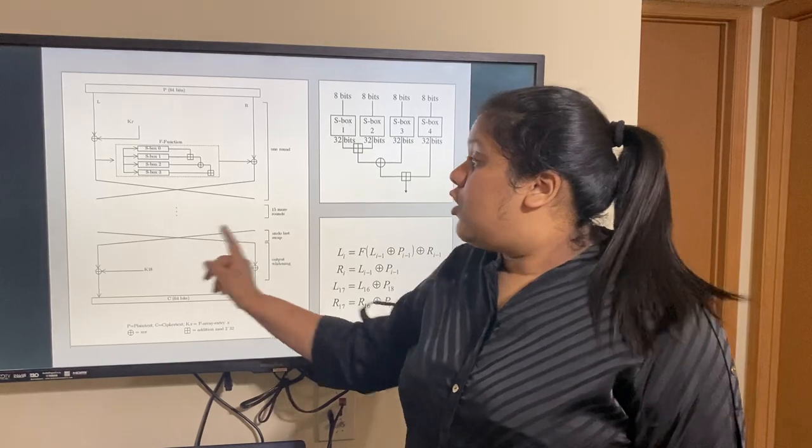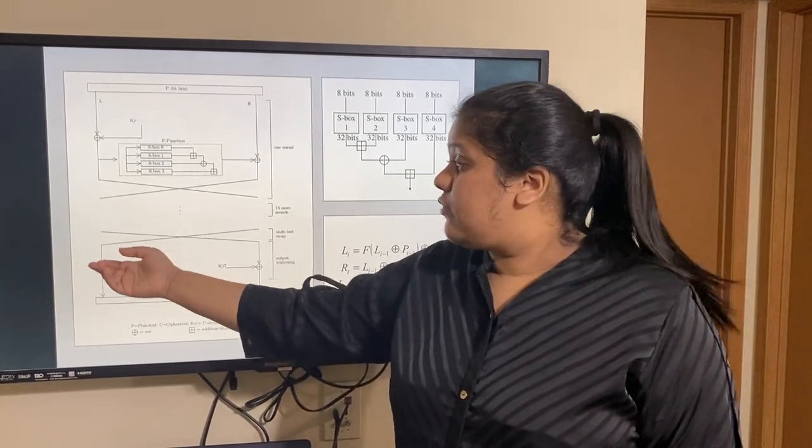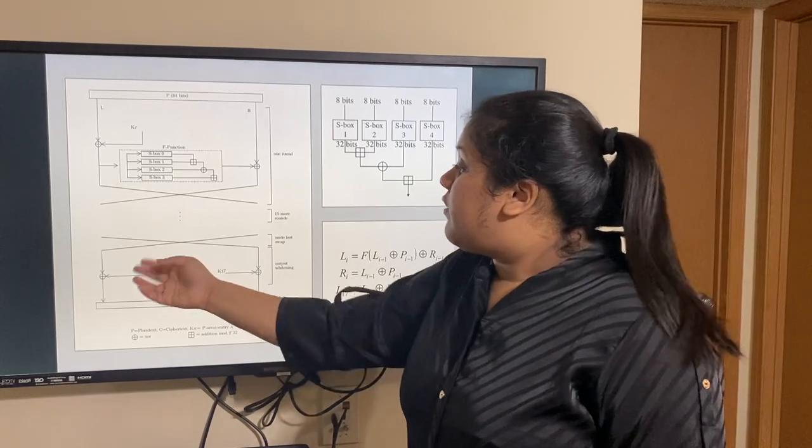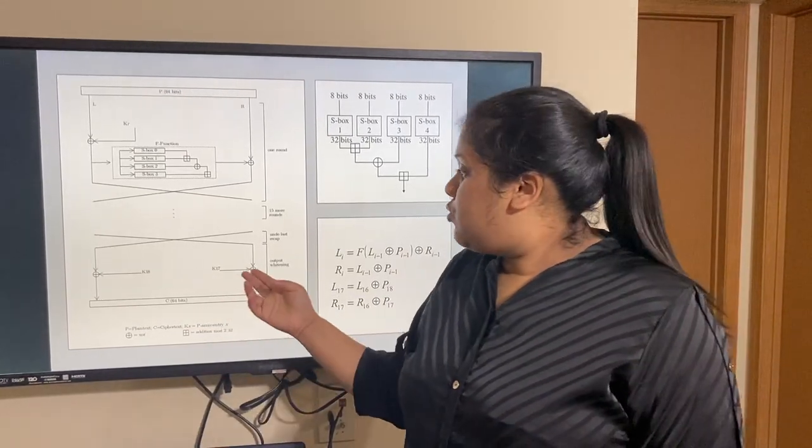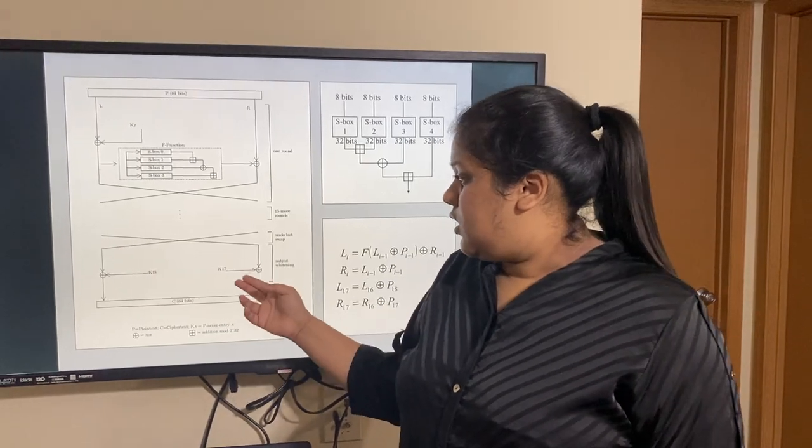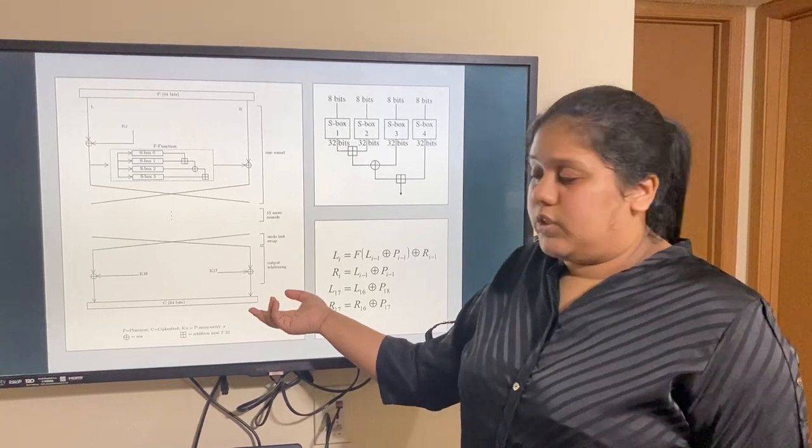What we first do is undo the swap that was done to get us the values of L16 and R16. After this, the remaining two keys are used to be XORed with L16 and R16. This is called as output whitening. And then we get a ciphertext of 64 bits.